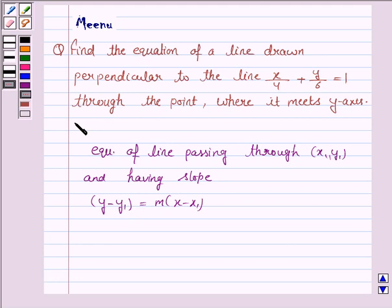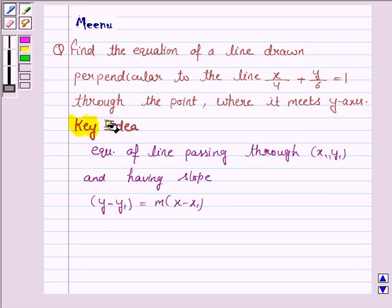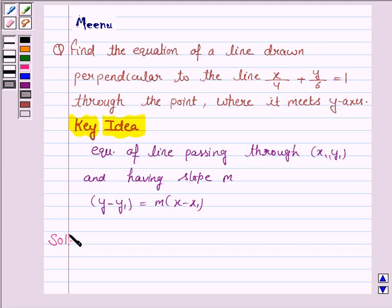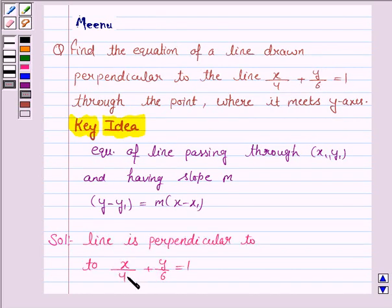So this will be our key idea for this question. Let us now proceed with the solution. The required line is perpendicular to x/4 + y/6 = 1. In this line, 4 is the x-intercept and 6 is the y-intercept.